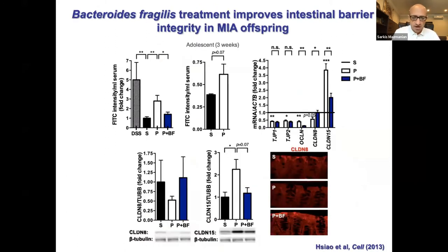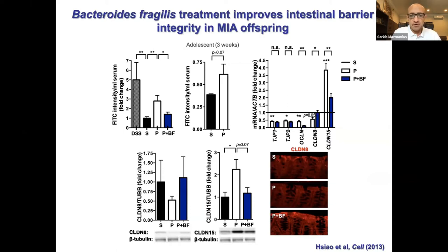Many years ago we used this model to initially understand whether there is a role for the gut and potentially the microbiome in behavioral and GI symptoms associated with autism. There is a significant proportion of individuals with autism that have gastrointestinal symptoms ranging from constipation to diarrhea, bloating, and abdominal cramps. There is emerging evidence — though more work needs to be done — of a specific barrier integrity defect in individuals with autism, often called leaky gut, where there's increased intestinal permeability.